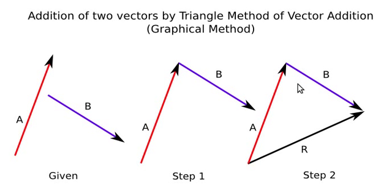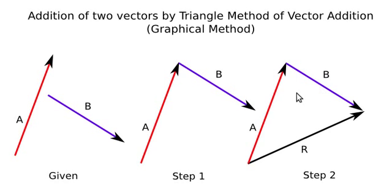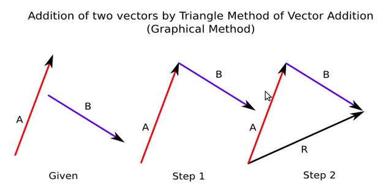Now you may have an idea why this is called the triangle method of vector addition. You can see the triangle here, which has two of its sides as the given vectors and the third side as the resultant vector. That's why we call it the triangle method — the resultant is obtained by completing the triangle with sides A and B, and the third side is the resultant.